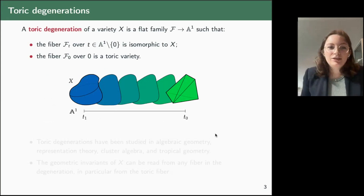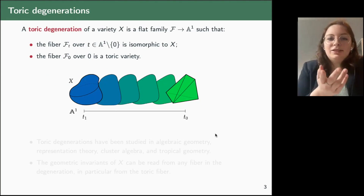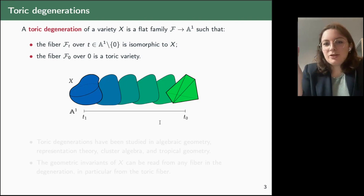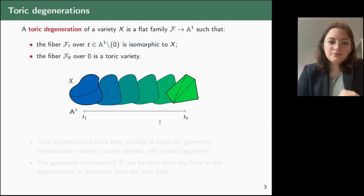A toric degeneration: we fix a variety X that we want to study. A toric degeneration is a flat family of varieties over the affine line such that every fiber is isomorphic to the variety X, and the fiber over zero is a toric variety.